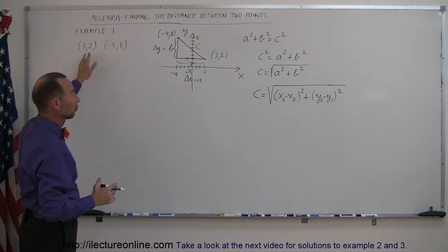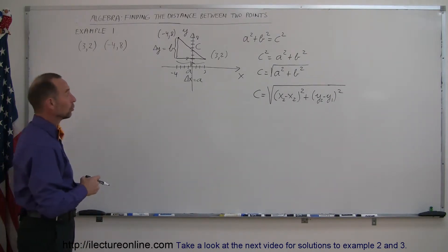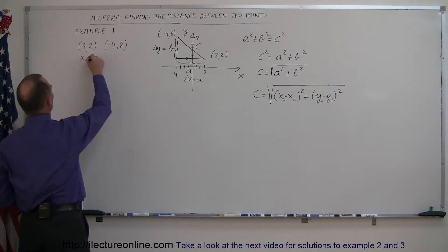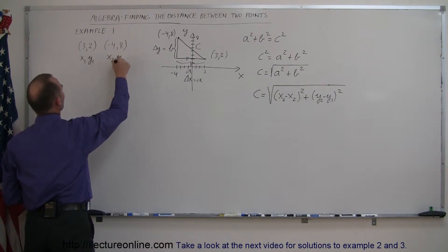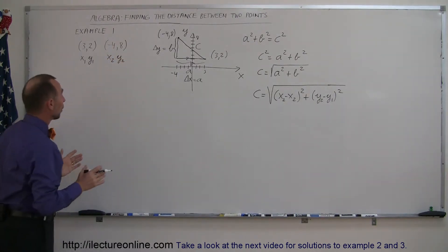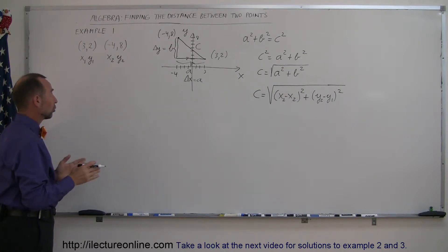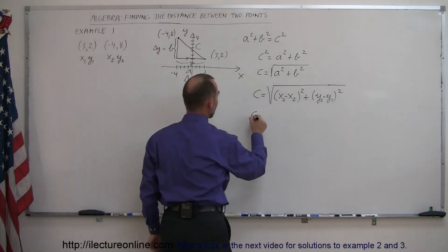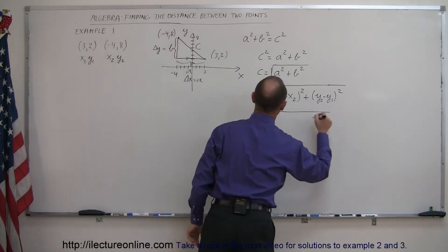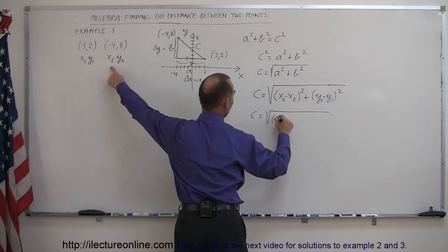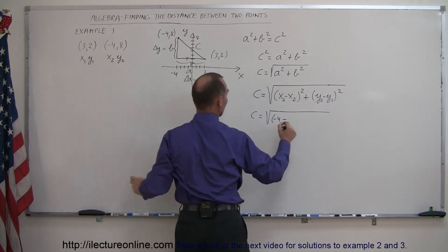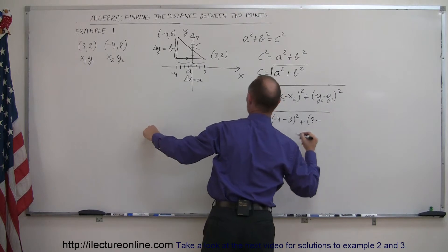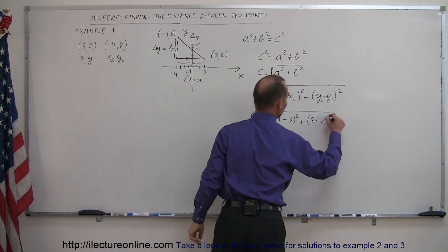Now let's use our example to calculate the distance between the two points. Label the first point as x1, y1 and the second as x2, y2 — it doesn't matter which you choose; you'll get the same answer either way. Plugging in: C equals the square root of x2 minus x1 squared plus y2 minus y1 squared. So x2 is minus 4, minus x1 which is 3, squared, plus y2 which is 8, minus y1 which is 2, squared.